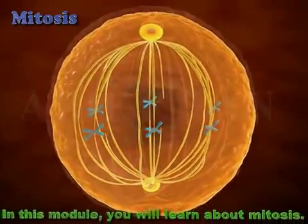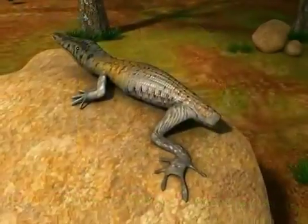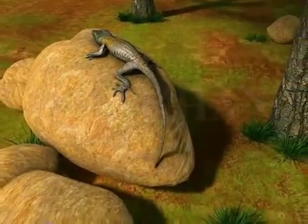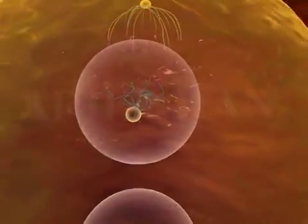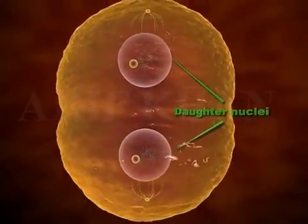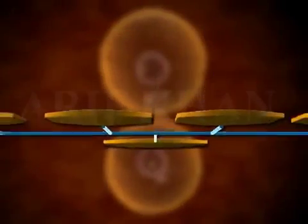Mitosis. In this module, you will learn about mitosis. Mitosis is a process of cell division that makes possible regeneration of body parts. To elaborate, mitosis is the separation of nuclear chromosomes into two identical daughter nuclei. It is divided into four key phases.